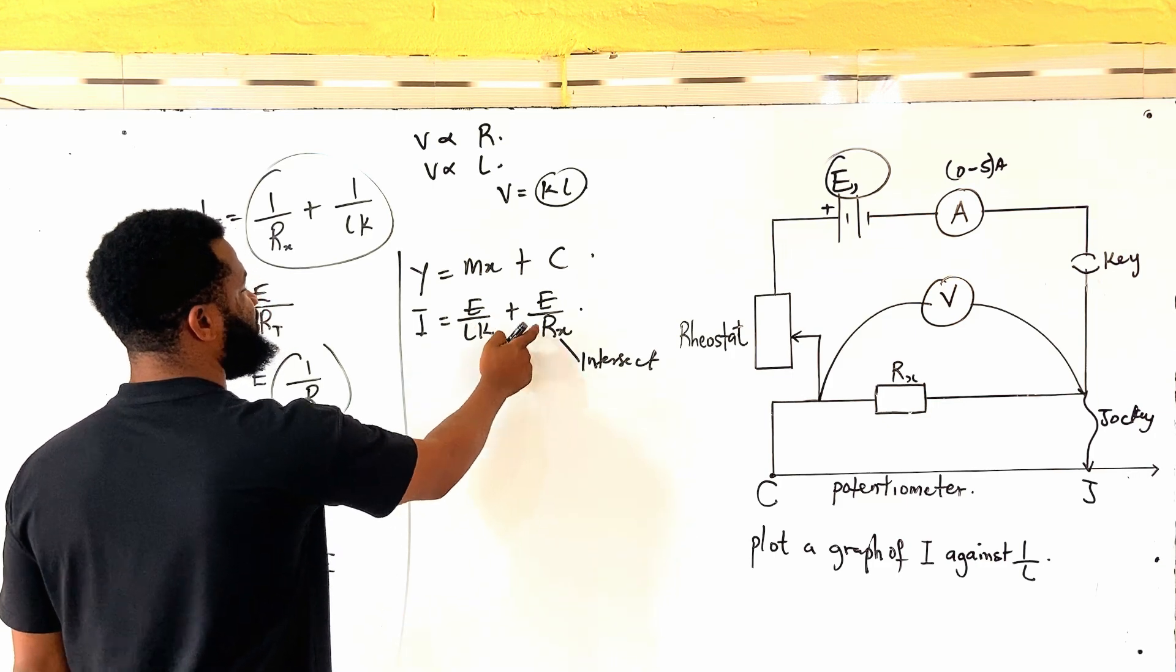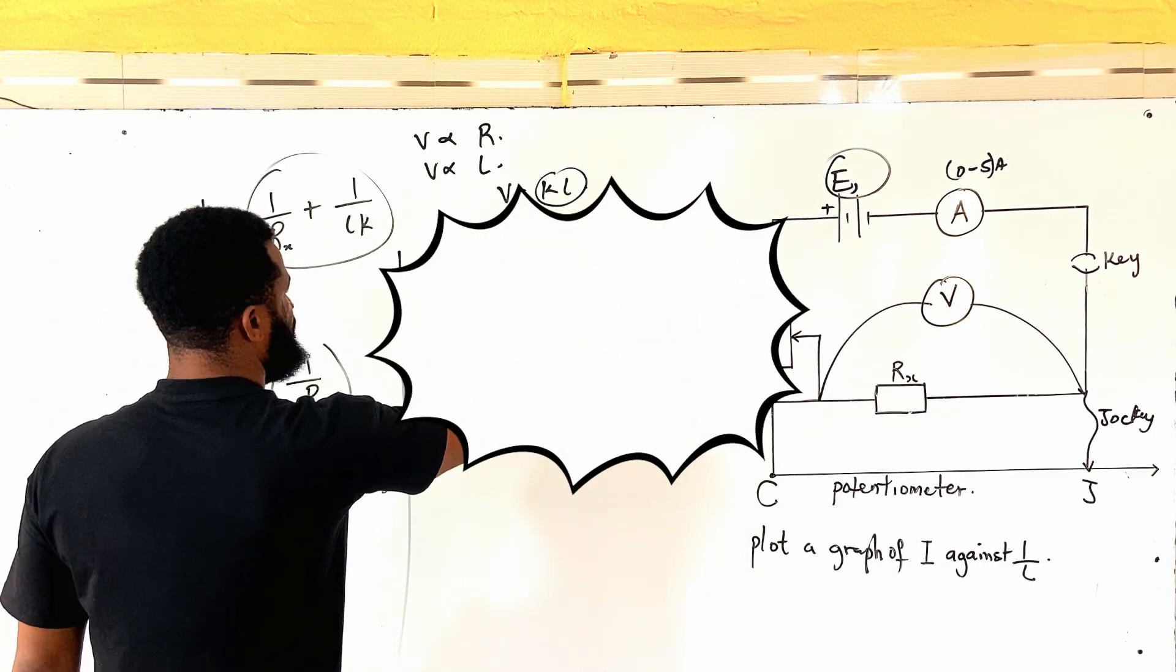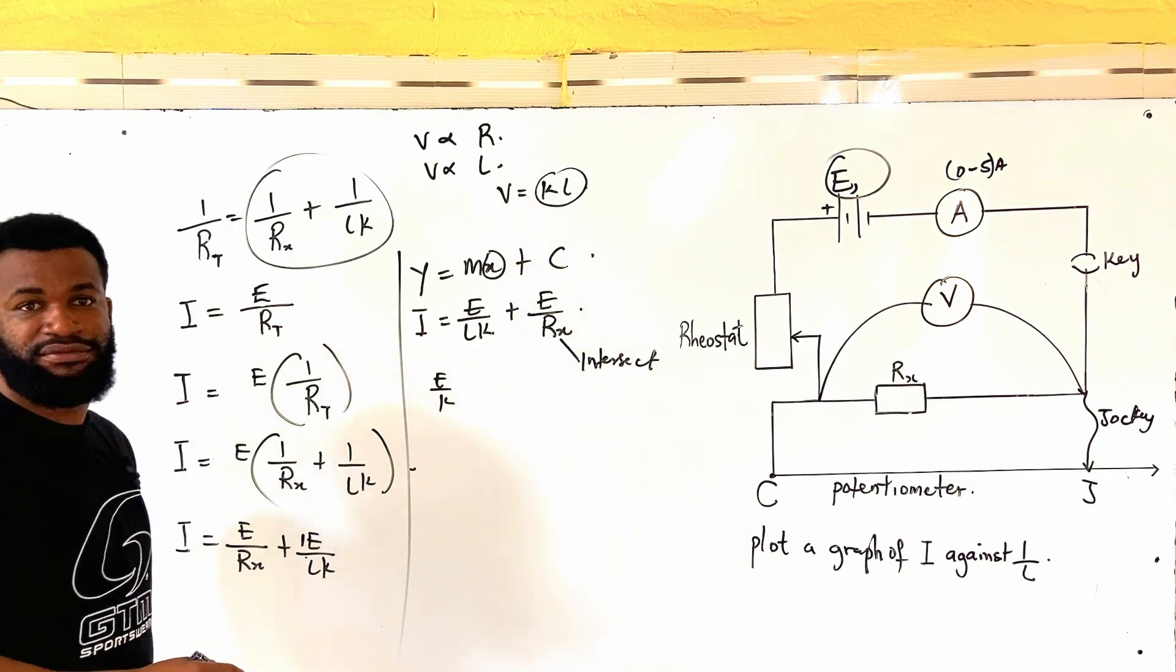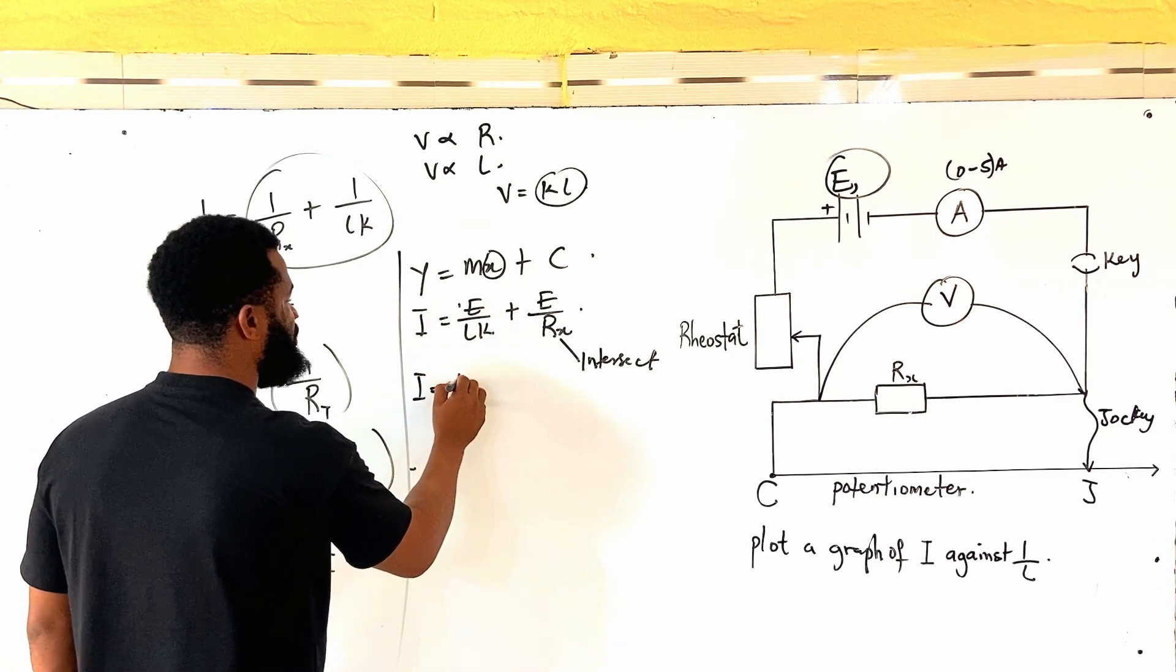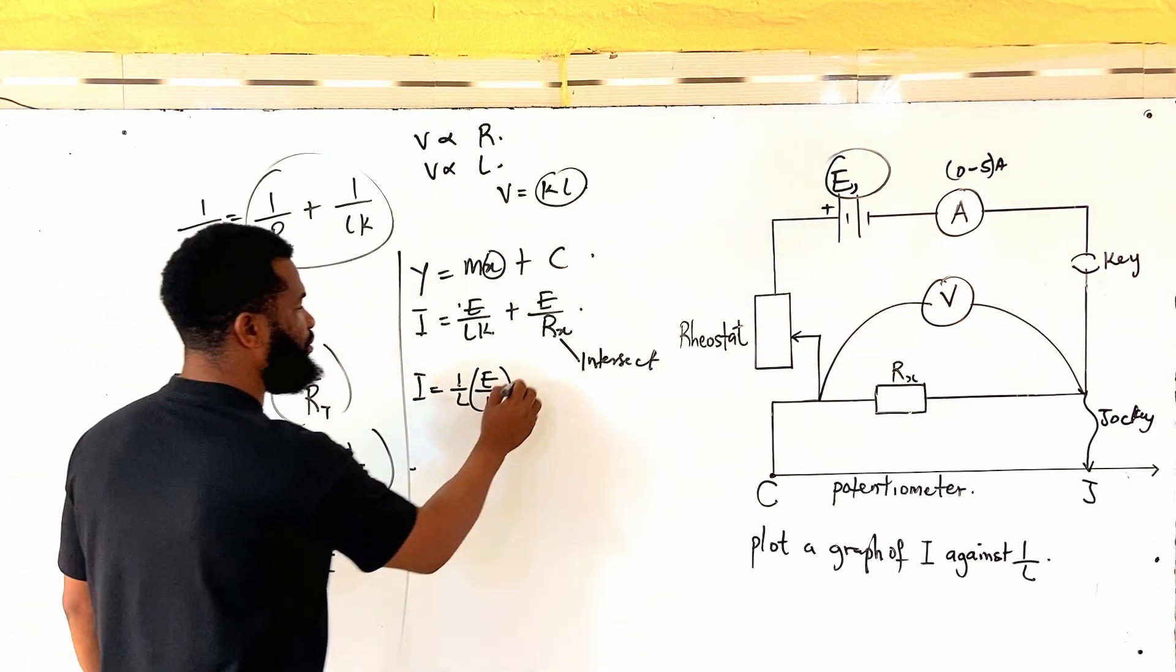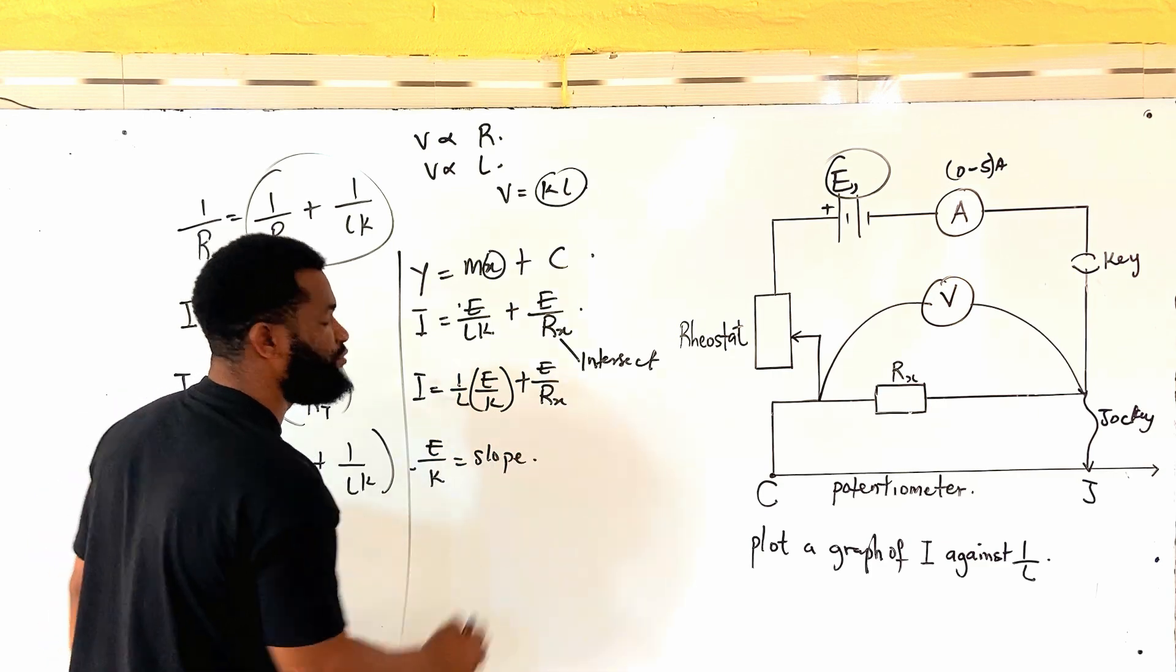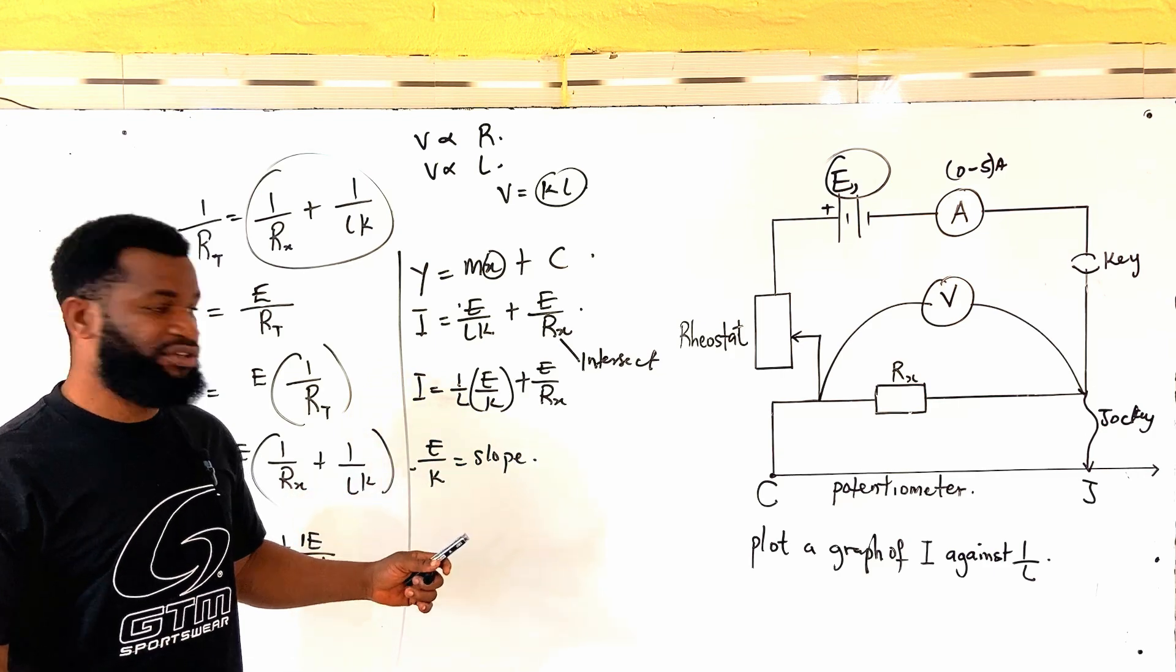Why this on the vertical axis? Why this is the slope? Slope is going to be, because this is slope. And the slope here is going to be E over K. It is going to be the slope. Because I am plotting 1, see what I am plotting. I will say I is equal to 1 over L bracket E over K, then plus E all over R sub X. E over K is equal to the slope. Do you understand? Because it is the coefficient of 1 over L, and 1 over L is the horizontal axis.